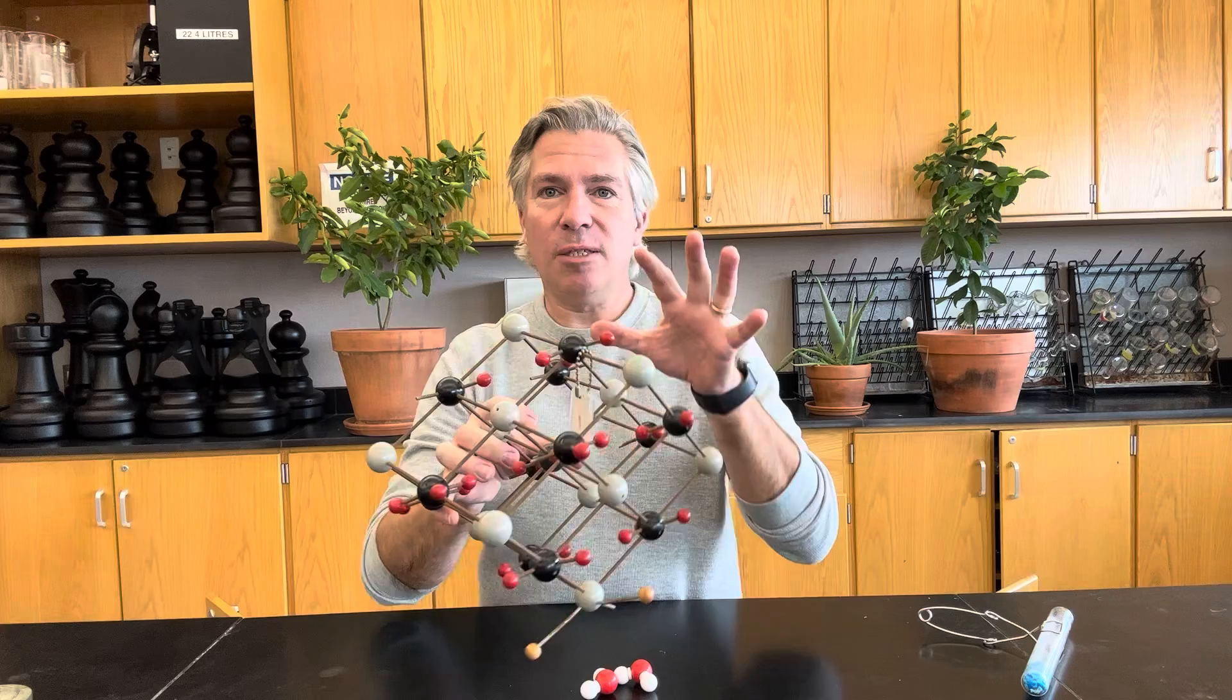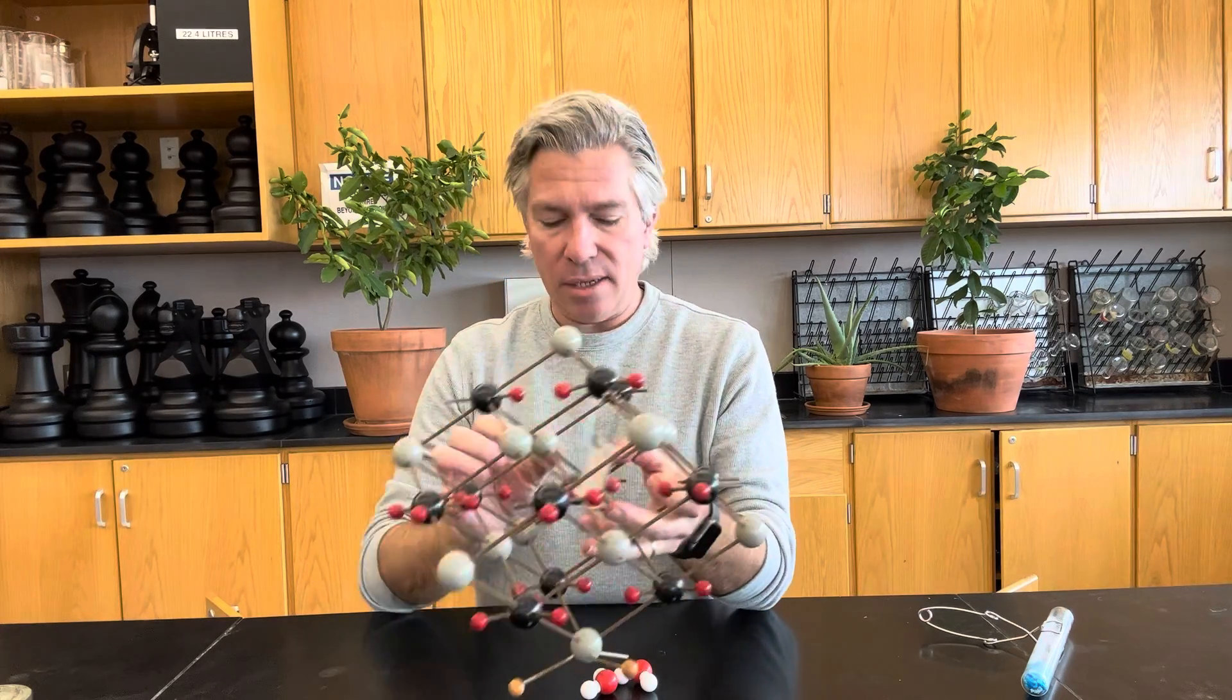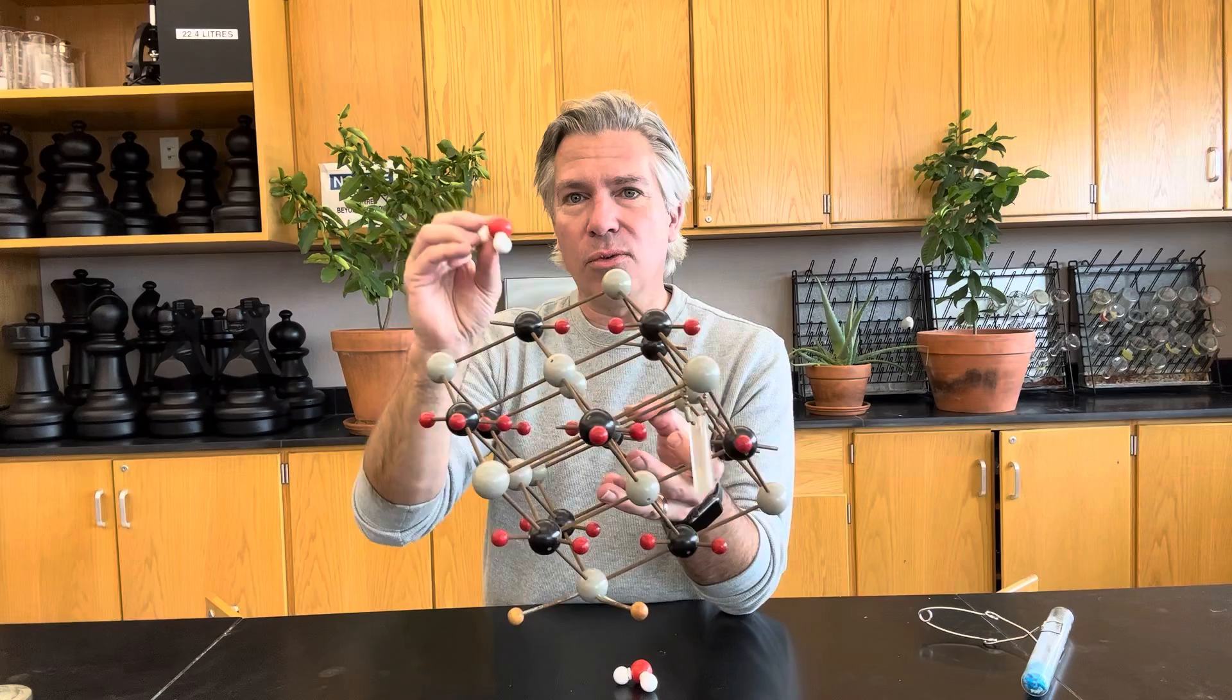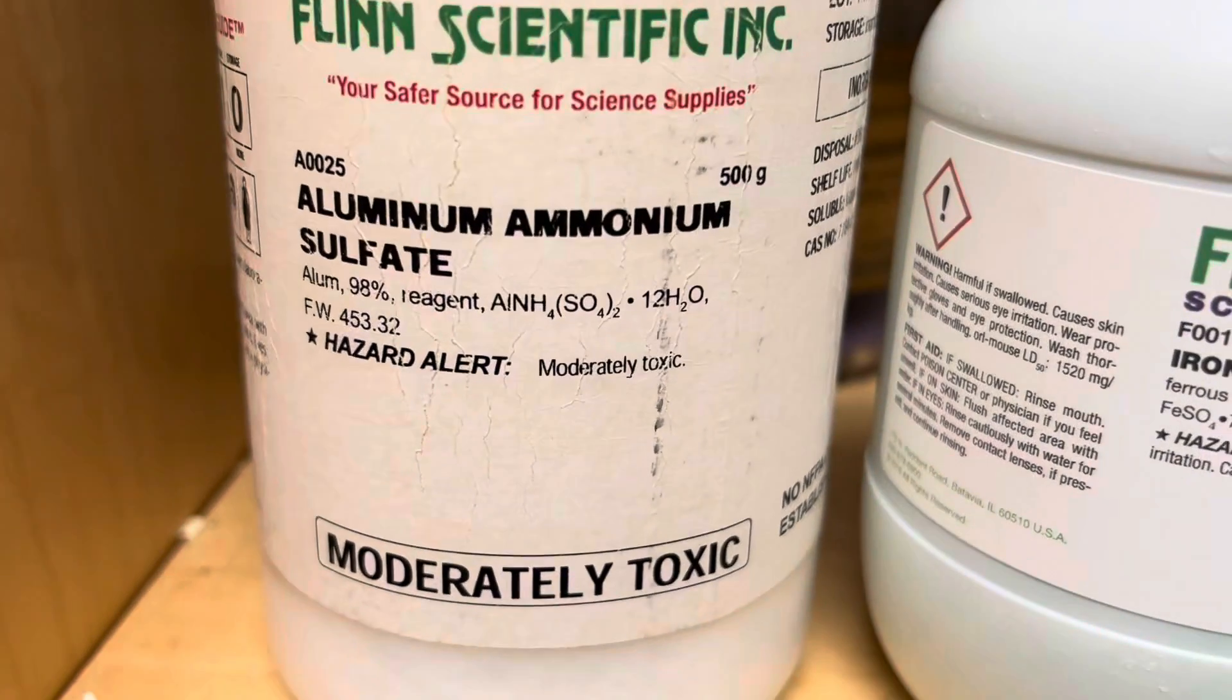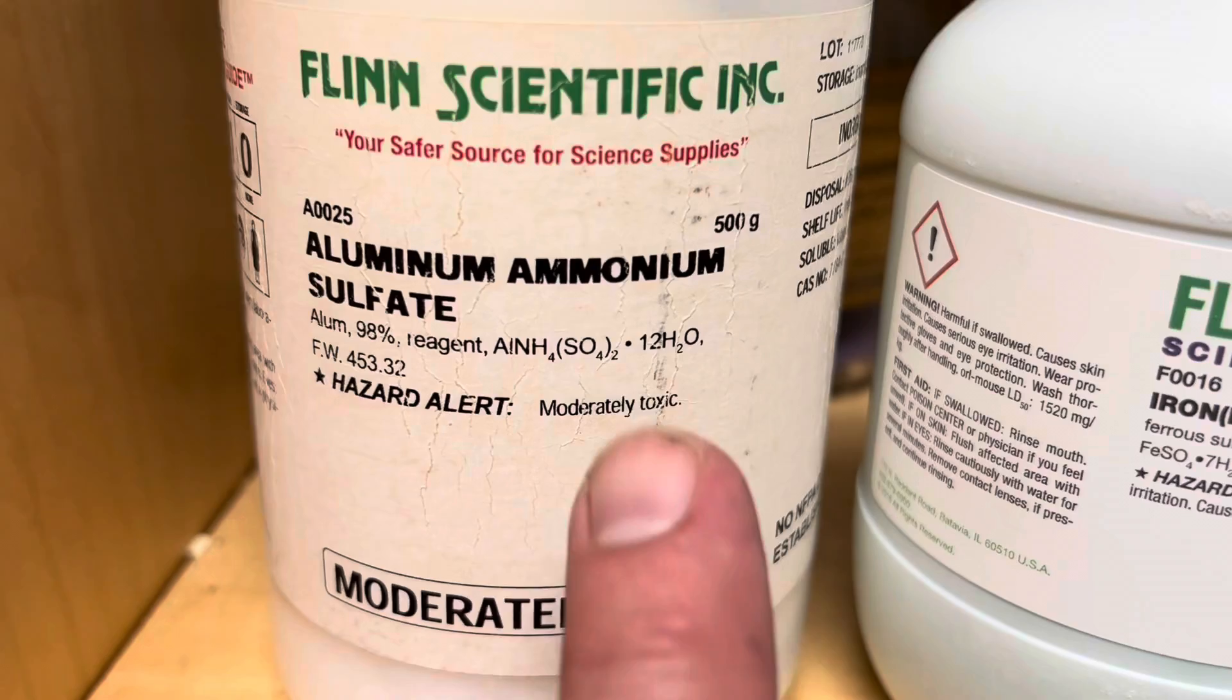Because ionic compounds typically form crystals, some ionic compounds have spaces between the ions that are big enough for little water molecules to get caught inside. So a hydrated ionic compound is an ionic compound with water trapped in its crystals.